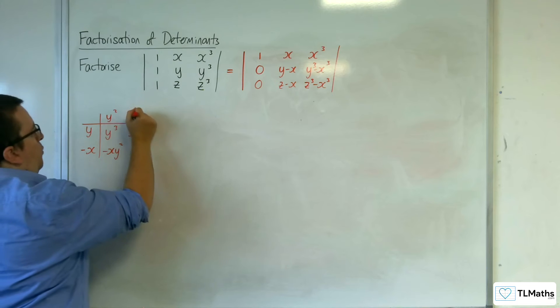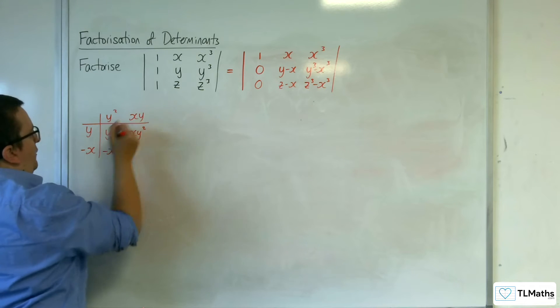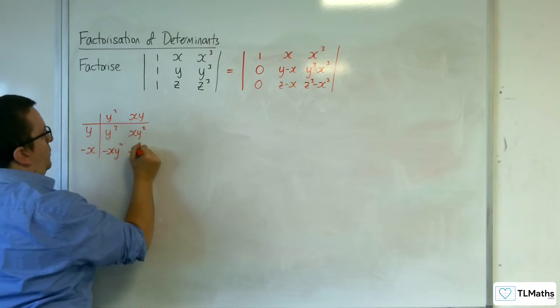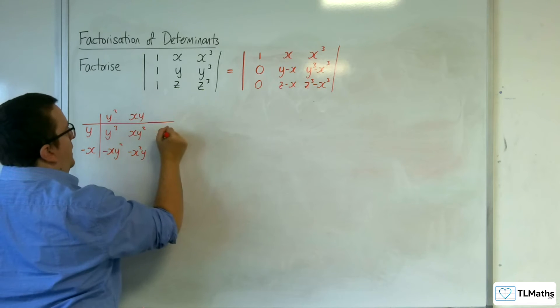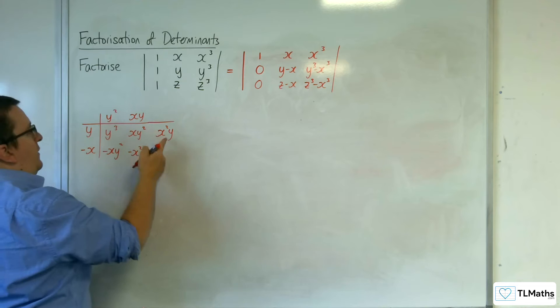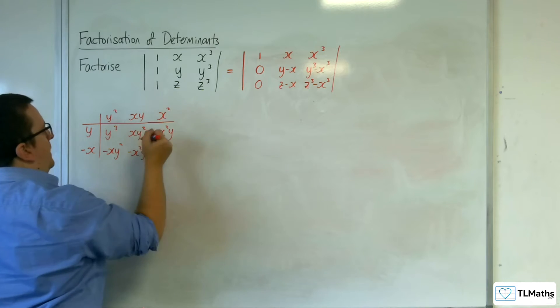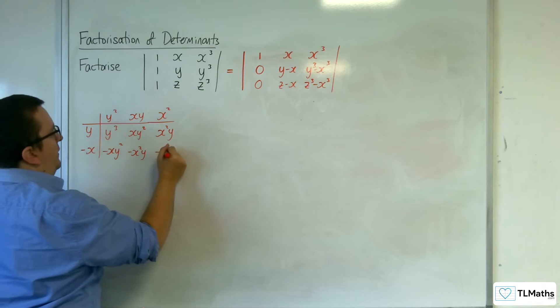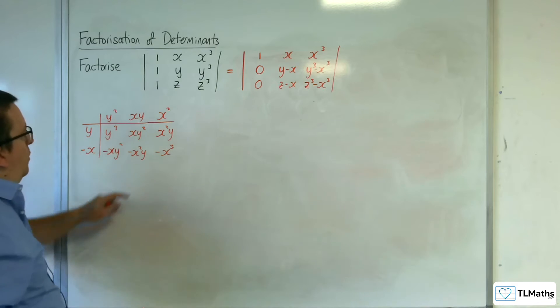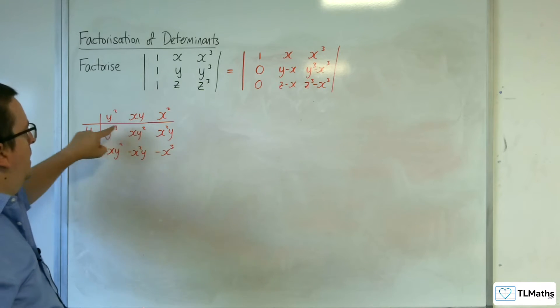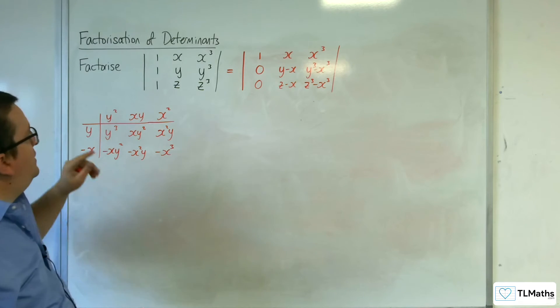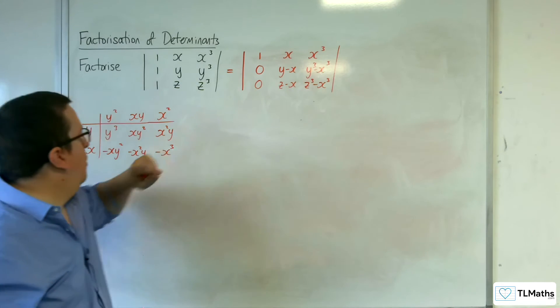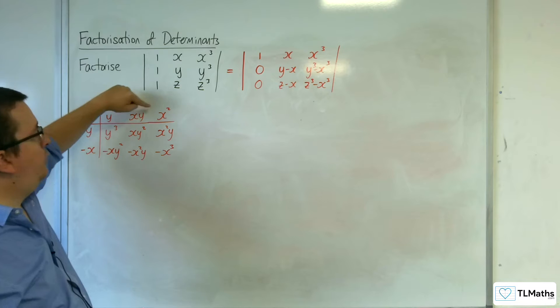So, y's into that go xy. Then, xy times minus x is minus x squared y. Now, there aren't any x squared y's, so I'm going to have to get rid of that as well. Then, y's into that go x squared. x squared times minus x is minus x cubed. So, all of that adds up to the y cubed take away x cubed.